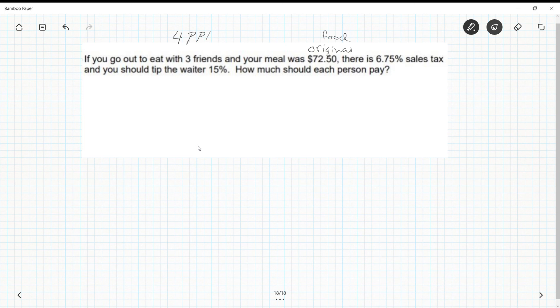So we take our $72.50 plus the tax 0.0675 times $72.50, plus 0.15 times $72.50. And we get, I plug these into a calculator, I get $4.89 plus $10.88 and $72.50.